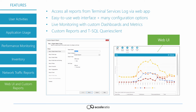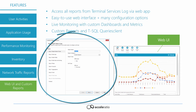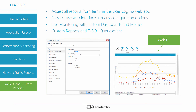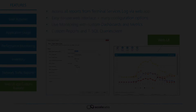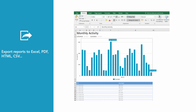Web UI allows you to access SysKit reports on the go from any device. Custom reports will fill the gap if you are missing some reports. Using a simple wizard, you can create your own report with the desired data. If you need a more advanced report, you can contact us and we will create TSQL queries. All reports can be exported to Excel, PDF, HTML, or CSV. Additionally, reports can be saved to a file share or uploaded to SharePoint.